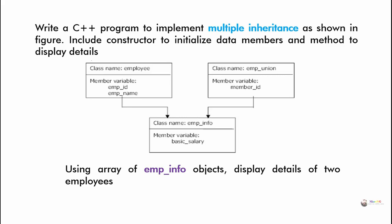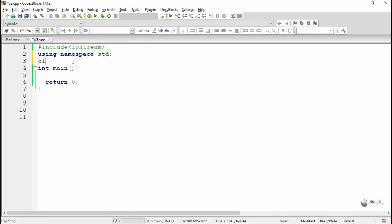In this program we have to create three classes. Employee and empUnion are base classes, and by using these two base classes we create one derived class which is empInfo. So empInfo has two parent classes: employee and empUnion. This is an example of multiple inheritance where one derived class has more than one parent.